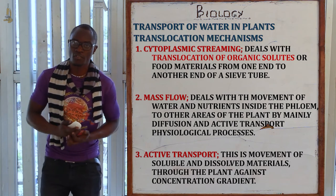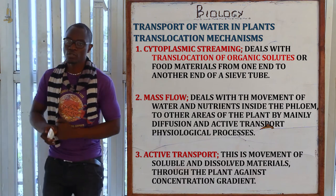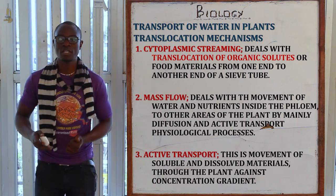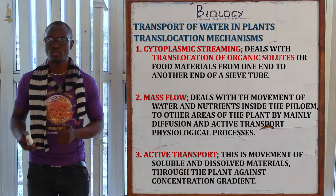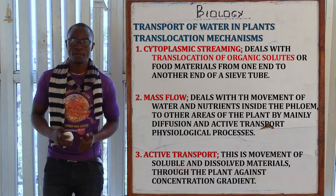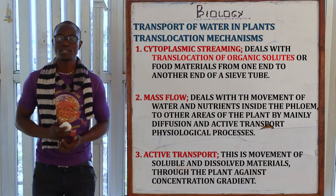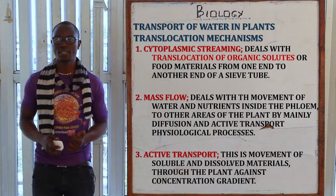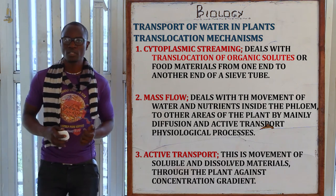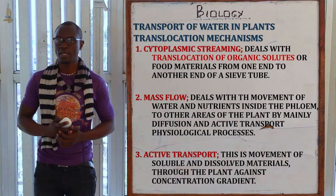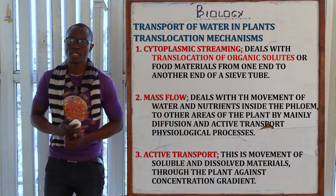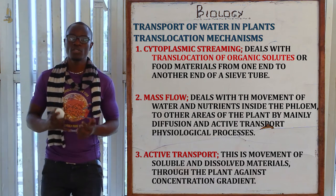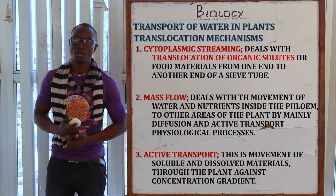Let's look at the mechanisms of translocation, of which we have three. The first is cytoplasmic streaming, which deals with the movement of organic solutes or food materials from one end to the other end of the sieve tubes. The second is mass flow, which is the movement of water and nutrients through the phloem by diffusion and active transport. Lastly, active transport is the movement of materials within the plant against the concentration gradient, requiring energy and protein carriers.